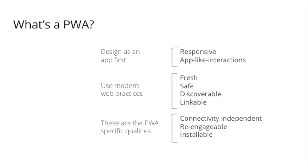When you actually look at these and break them down from a more modern perspective, you get three groups of these pillars. The first one is very obvious — now in 2021, this is what we're doing anyway when building web applications: having an app mindset first. You're thinking about how users are interacting with it, making sure it works across different device sizes, with transitions and animations and an app-like feel.